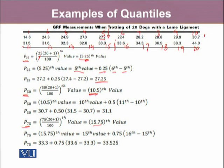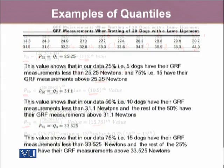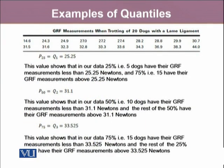We already know that 1st quartile is equal to the 25th percentile, and it turned out to be 25.25. This value can be interpreted as that in our data, 25 percent, which means 5 dogs have their GRF measurements less than 25.25 Newtons, and since in our data we have 20 observations, 5 is actually 25 percent of our overall data. And 75 percent, which is going to be 15, so therefore 15 dogs have their GRF measurements above 25.25 Newtons.